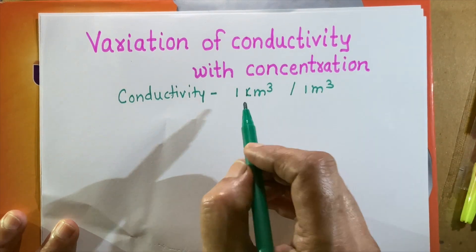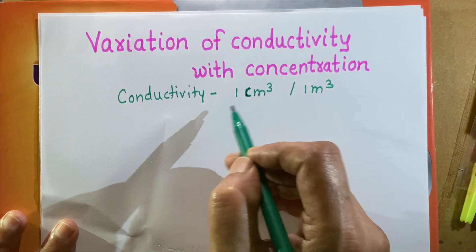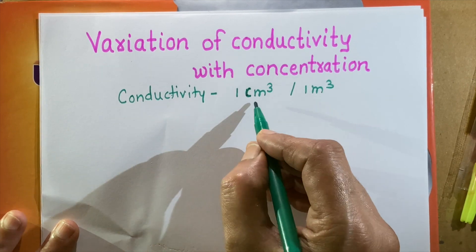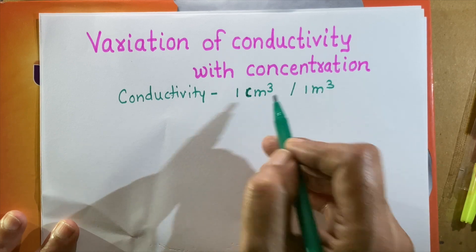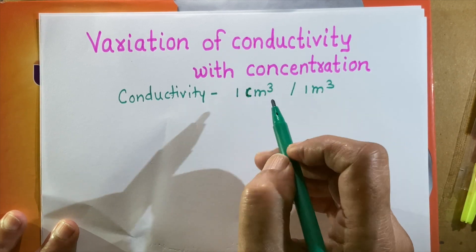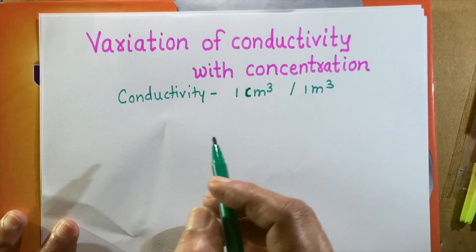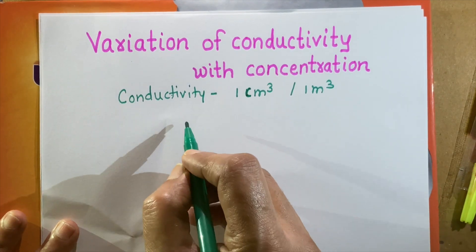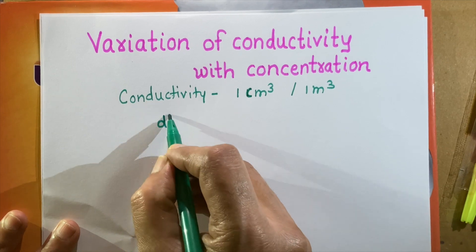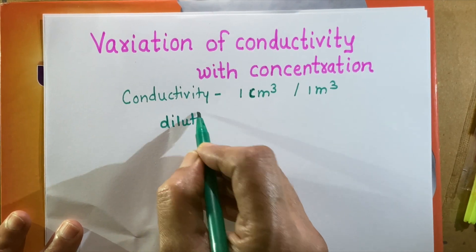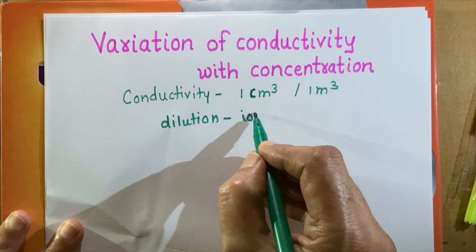We have said that if the concentration is more, then the number of ions will be more. If the concentration is less, number of ions are less. That is, conductivity depends upon concentration of the solution. And if we decrease the concentration or if we dilute the solution, on dilution, the ionization increases.